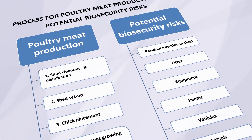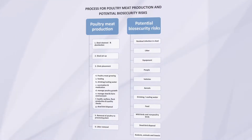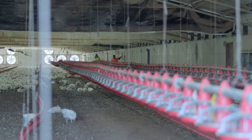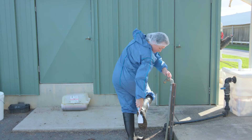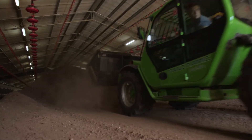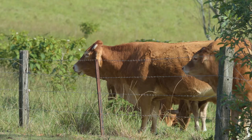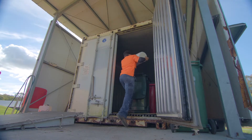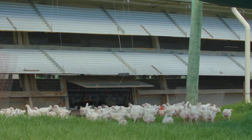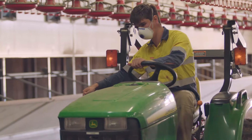Poultry meat production has a number of process stages and biosecurity risks can occur in each stage. The potential for disease to enter or exit the property represents the greatest risks. The main ways that pathogens spread is through contaminated people, contaminated vehicles and equipment, contaminated litter, wild birds, rodents, feral animals, insects, livestock and domestic pets, contaminated feed and water, poultry movement including mortalities, and through the air. We'll look at each area and show how these biosecurity risks can be managed to prevent or minimise disease and pathogen spread.